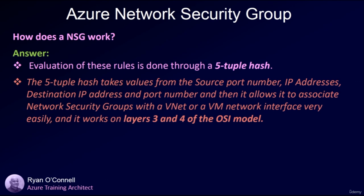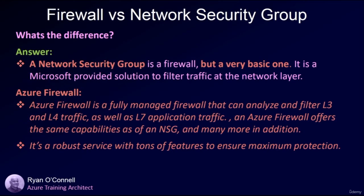The NSG evaluates rules through a five-tuple hash, taking values from the source port number, source IP address, destination IP address, and destination port number. This allows it to associate traffic with a network security group on a VNet or VM network interface. NSGs work at layers 3 and 4 of the OSI model.